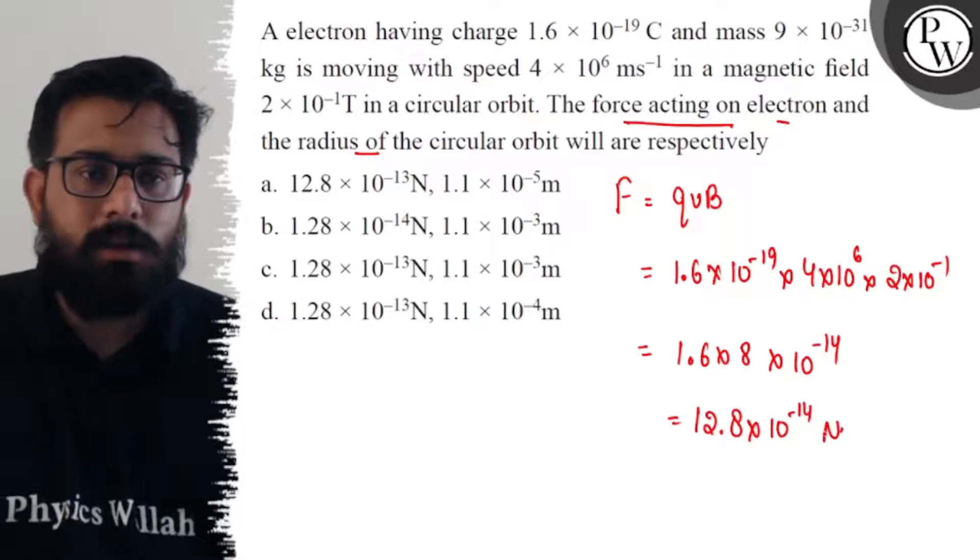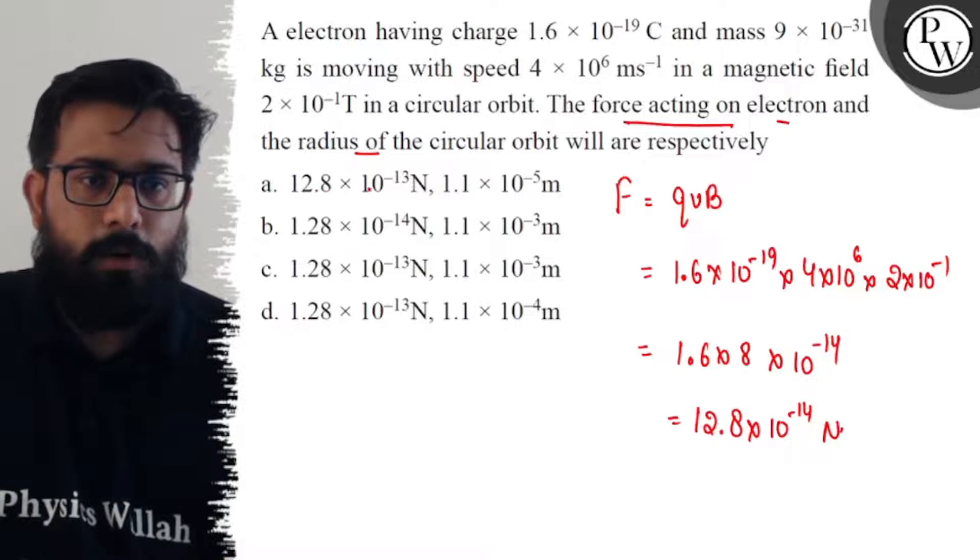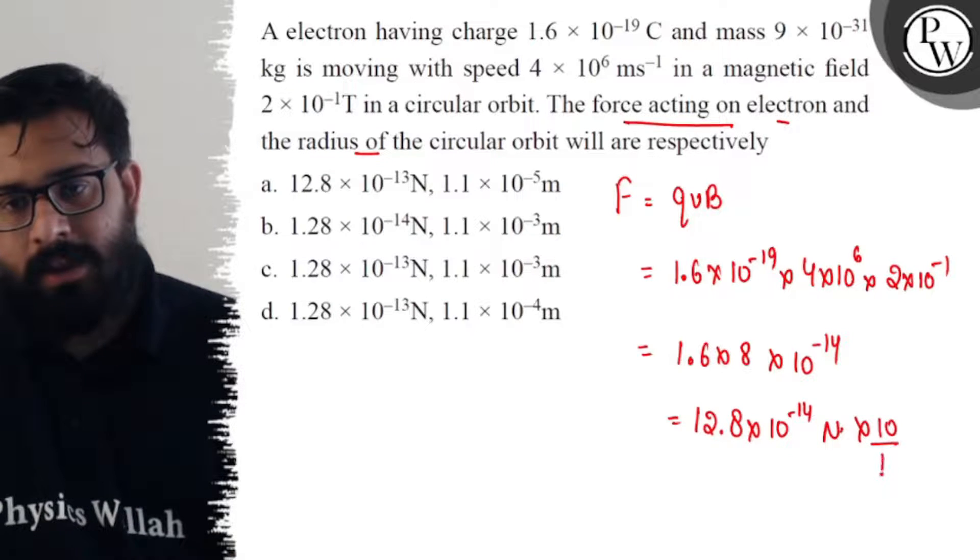This is the answer: 12.8 × 10^-14 newton. But I don't have any option like 12.8 × 10^-14, so let's multiply this with 10 and divide it with 10.